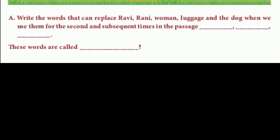Section A: Write the words that can replace Ravi, Rani, woman, luggage, and dog when we use them for a second and subsequent time in the passage. For example, 'Ravi is an intelligent boy. Ravi lives in a small village' — but we say 'He lives in a small village.' Similarly, 'Rani is a brilliant girl. Rani lives in an urban area' — we say 'She lives in an urban area.' So, for a boy we use 'he', for a girl we use 'she', for objects we use 'it'. These words are called pronouns.